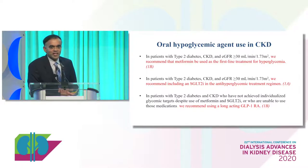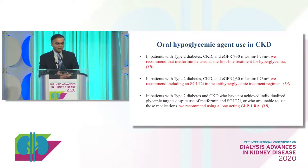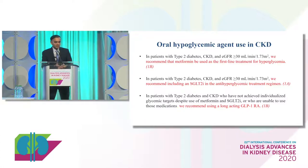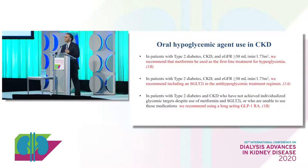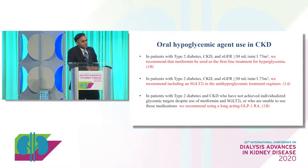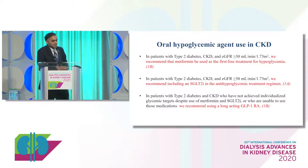Regarding which oral hypoglycemic agents to use: in patients with type 2 diabetes, CKD, and eGFR over 30, we recommend metformin as first-line therapy, graded 1B. We also recommend including an SGLT2 inhibitor in the anti-hyperglycemic treatment regimen, graded 1A, based on trials demonstrating patient-centered outcomes including reduced mortality and slowed kidney disease progression. For patients where GFR has dropped to 25, GLP-1 receptor agonists remain an option, graded 1B.